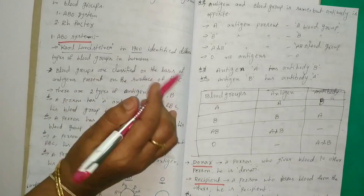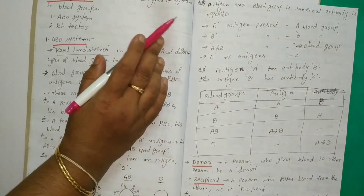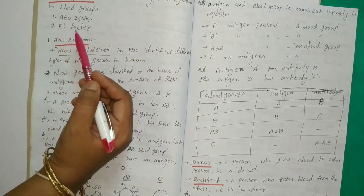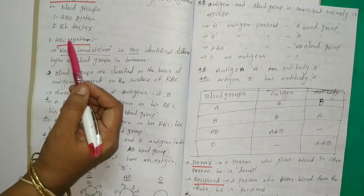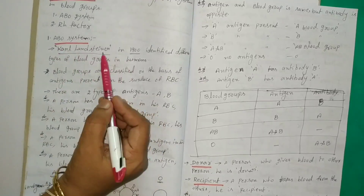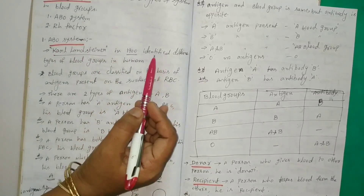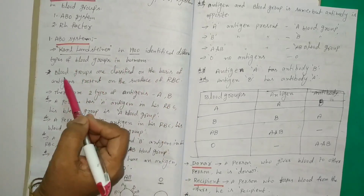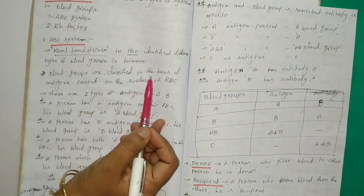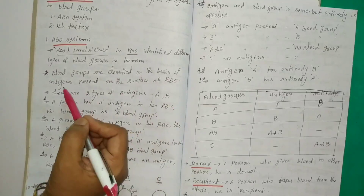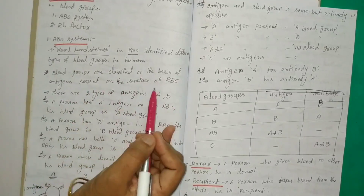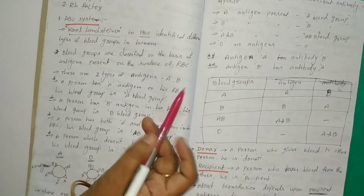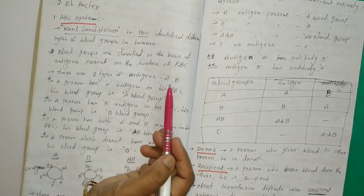There are two types of blood group systems. First one: ABO system. Second: RH factor. Carl Landsteiner in 1900 identified different types of blood groups in humans. Blood groups are classified on the basis of antigens present on the surface of red blood cells. There are two types of antigens: A and B.